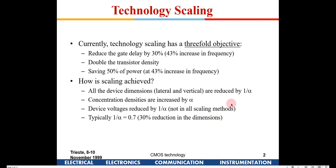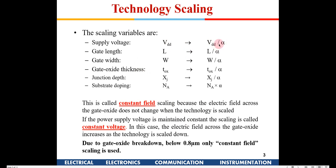We need to reduce voltage to keep the electric field constant. If you just decrease device dimensions and keep voltage the same, that is known as constant voltage scaling. But in most cases, constant electric field scaling is used — the electric field is kept constant by also reducing the voltage by a factor of alpha, so there will be no junction breakdown and the principle of operation generally remains the same.